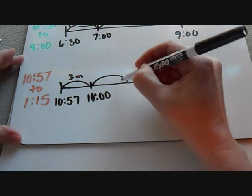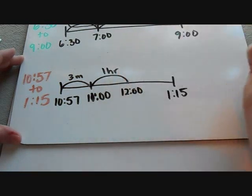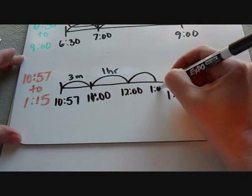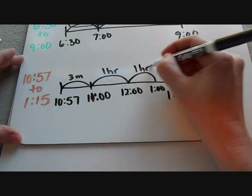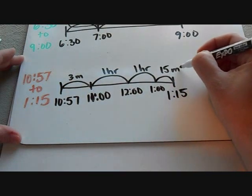And then from 11 o'clock, if I jump another hour, that's 12 o'clock. So I label it up there. And another hour would be 1 o'clock. So that's another hour. And then from 1 o'clock to 1:15 is 15 minutes.